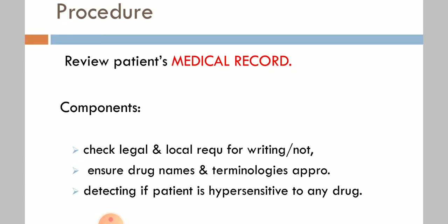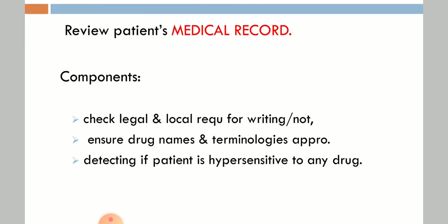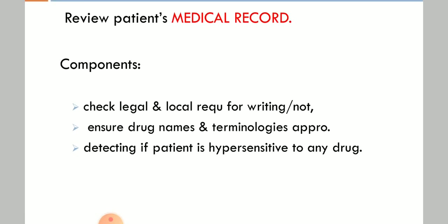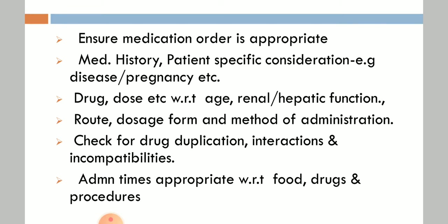The process for medication review involves reviewing the patient's medical record, checking legal and local requirements for writing orders, ensuring drug names and terminologies are given properly, and detecting if the patient is hypersensitive to any drug. The pharmacist ensures medication orders are appropriate, documenting medical history and patient-specific conditions like disease and pregnancy, along with drug dose, age, renal or hepatic functions, route, dose form, and method of administration.